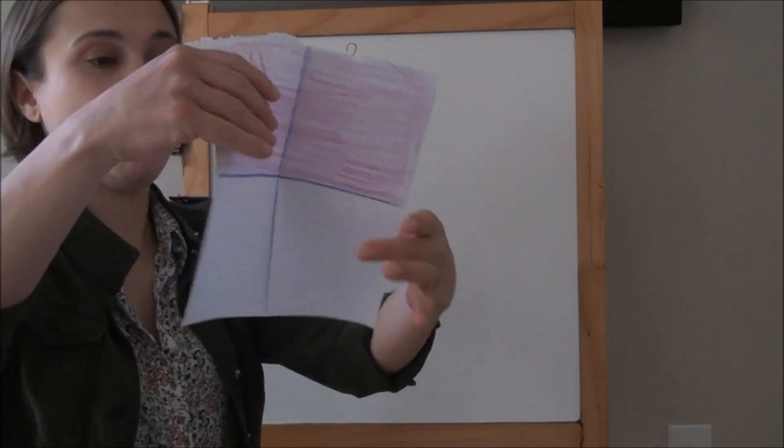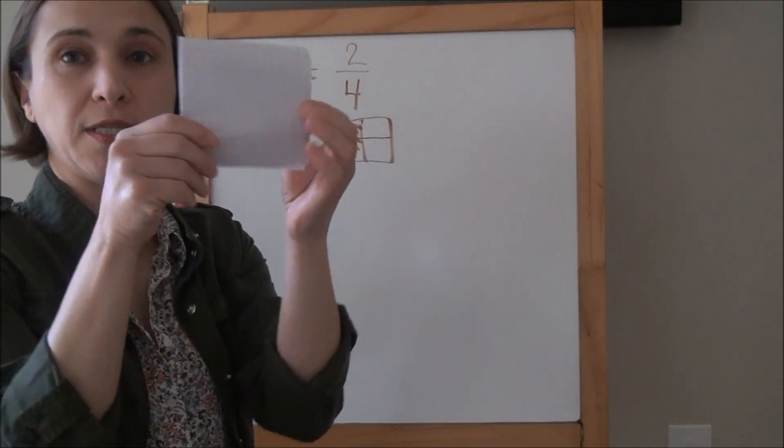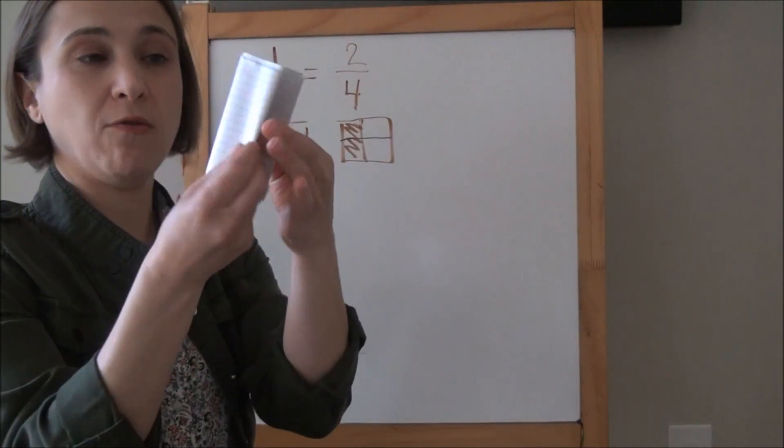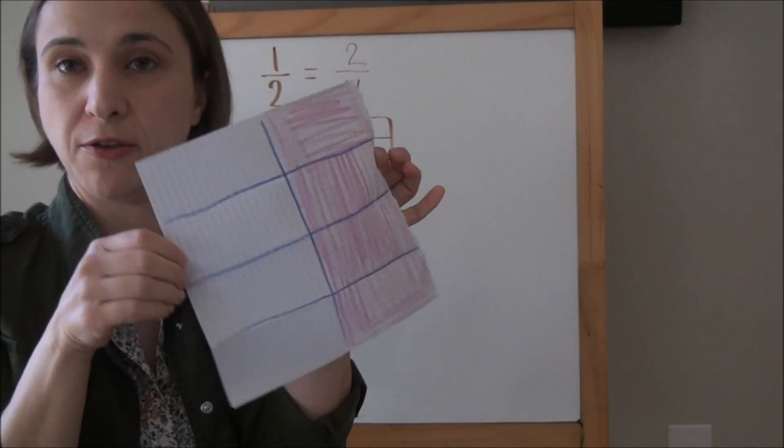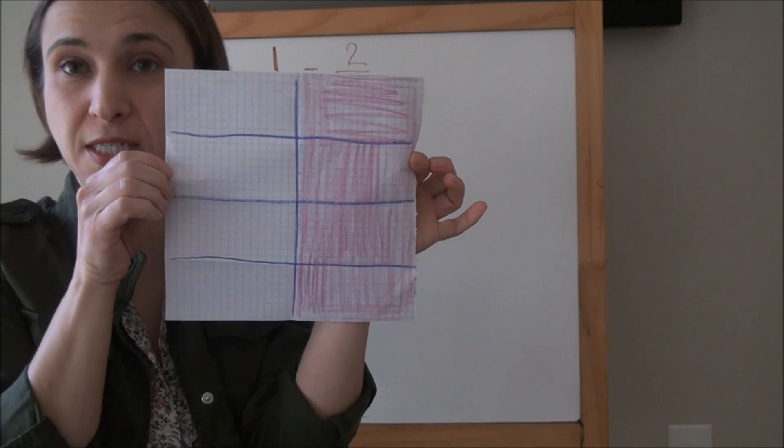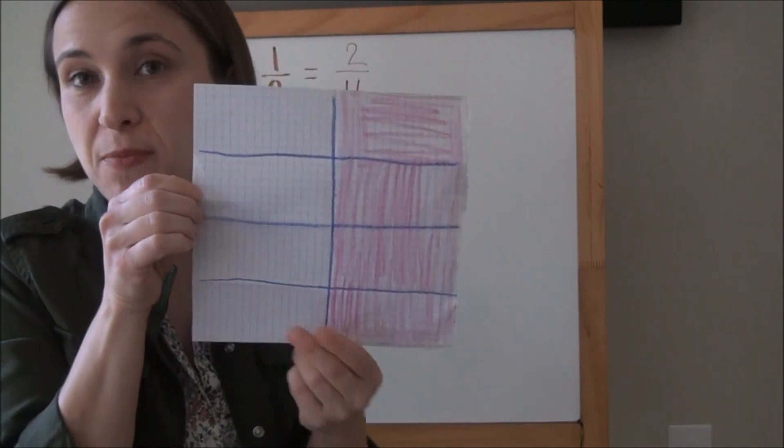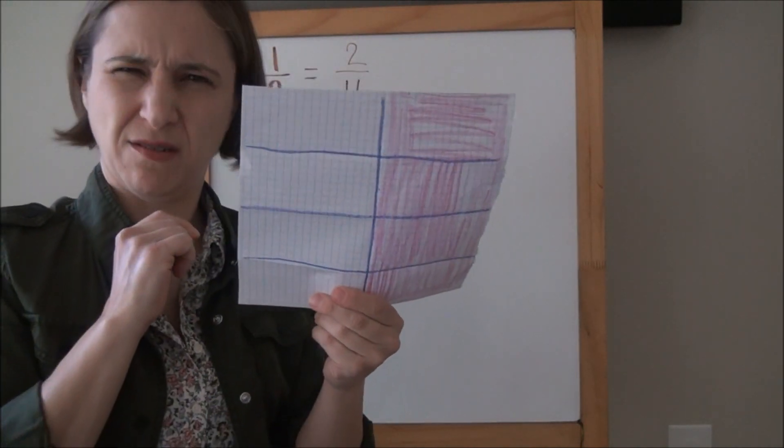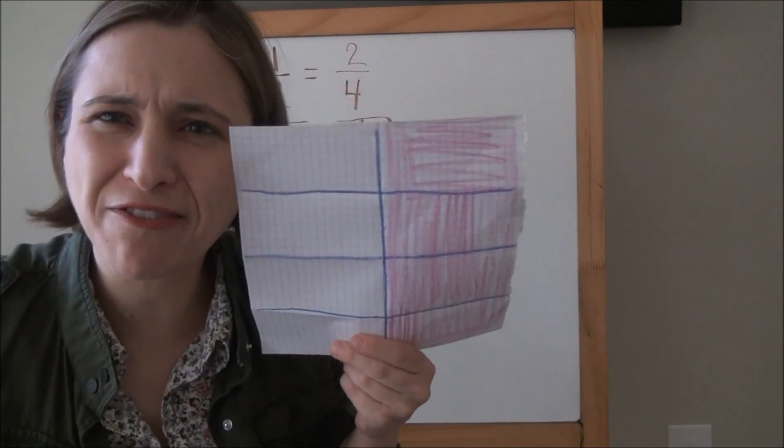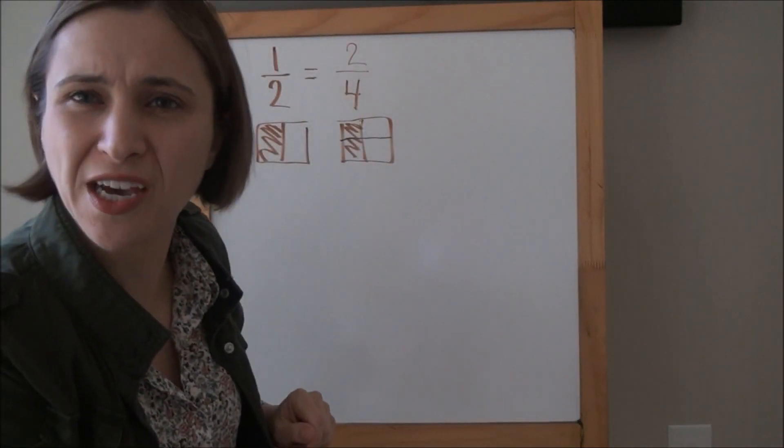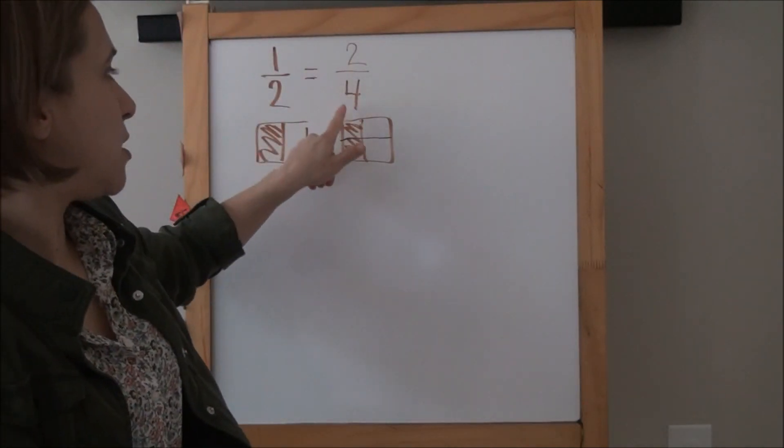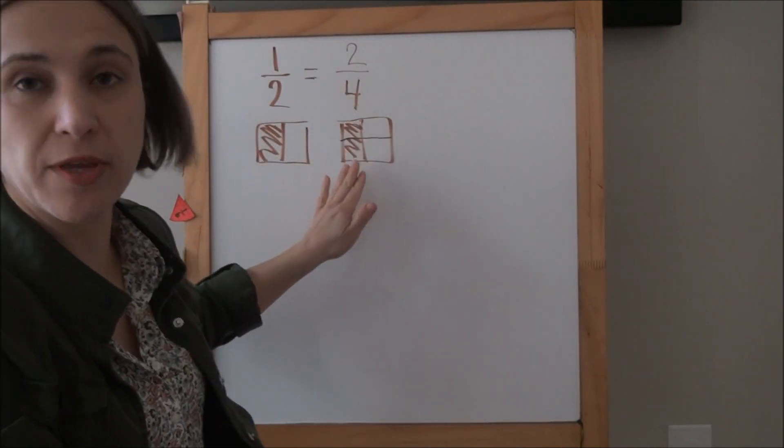Let's try this again. Fold your paper back up the way it was into that small square. Now fold it in half again. I've opened up my paper. I've traced all those new folds so they're super easy to see. Now what fraction of my paper is colored? Wait a second, I heard somebody say four-eighths. Four-eighths? I only told you to color one-half.